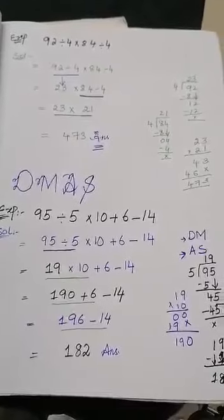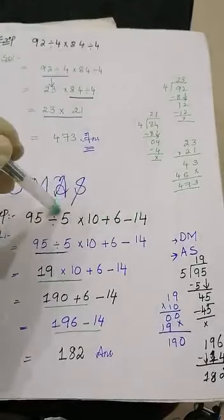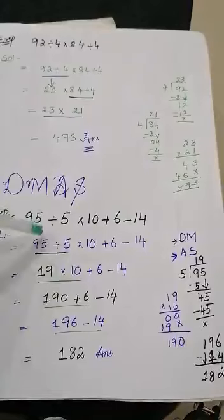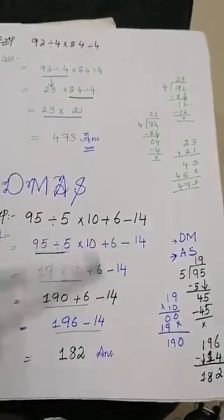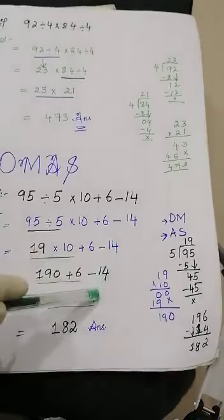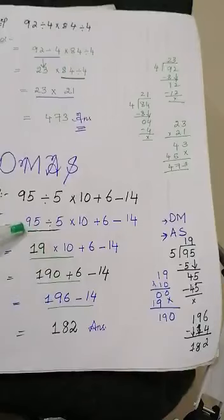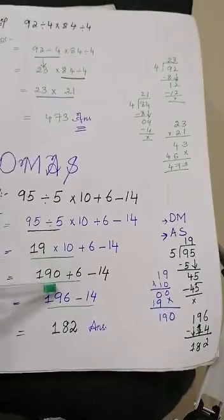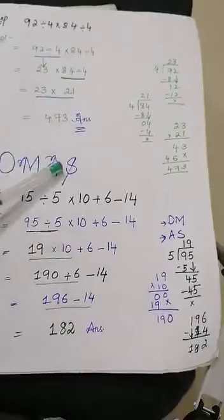Now the next example of the DMAS rule: 95 divided by 5, multiplied by 10, plus 6, minus 14. First, solve the division: 95 divided by 5 equals 19. Multiply 10 is carried as it is, plus 6, minus 14. Next step, multiplication: 19 multiplied by 10 equals 190. Then: 190 plus 6 equals 196, minus 14 equals 182. The answer is 182.